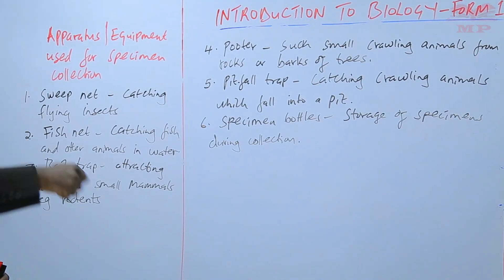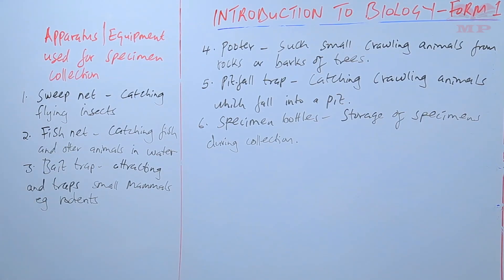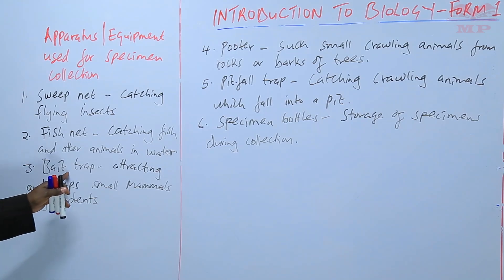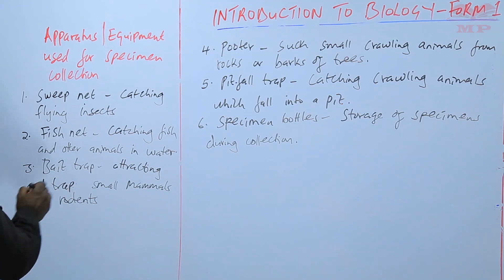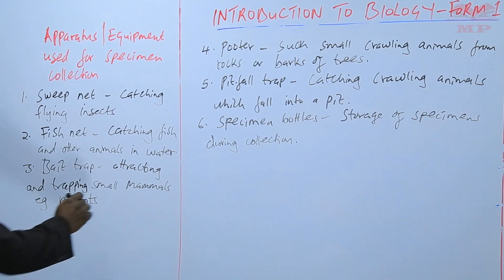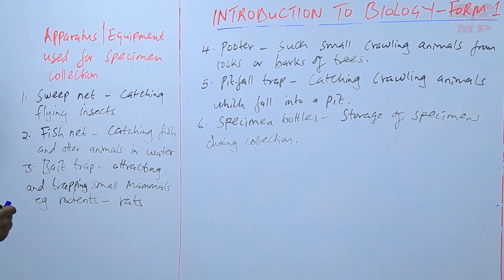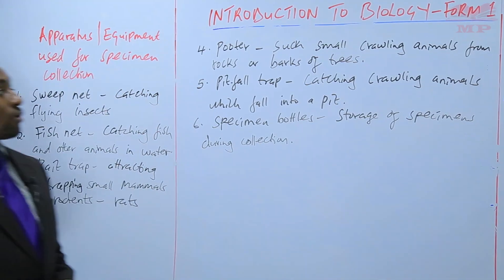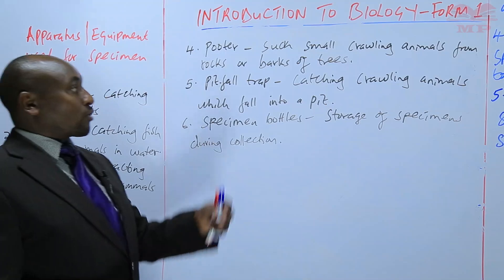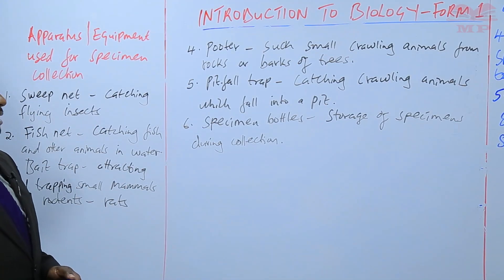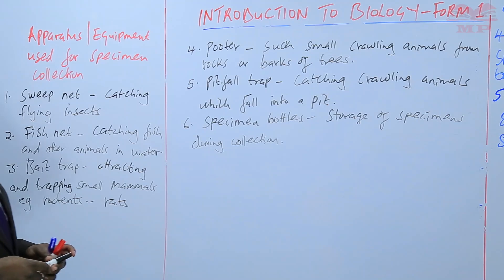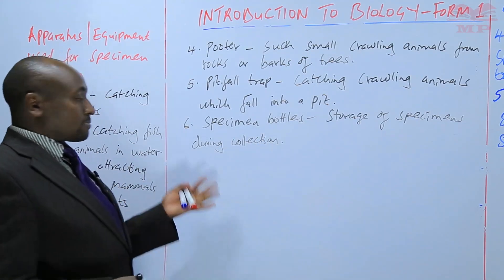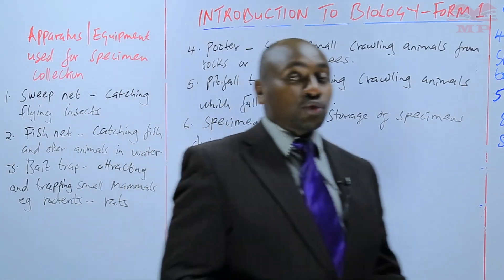We also learned about the apparatus used for specimen collection. There is a sweep net for catching flying insects, the fishnet for catching fish and other animals in water, the bait trap for attracting and trapping small mammals such as rodents like rats and mice, the pooter for sucking small animals from rocks or barks of trees, the pitfall trap for catching crawling animals by making them fall into a pit, and finally specimen bottles for storage of specimens.